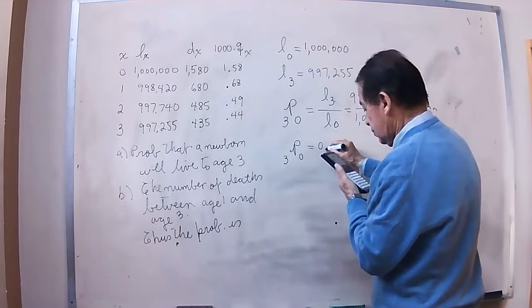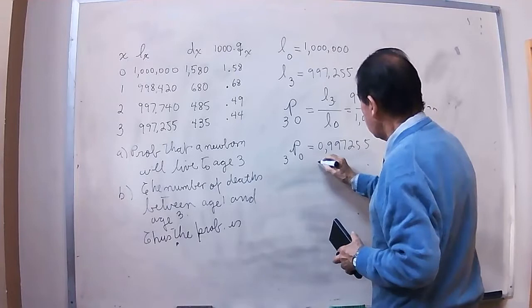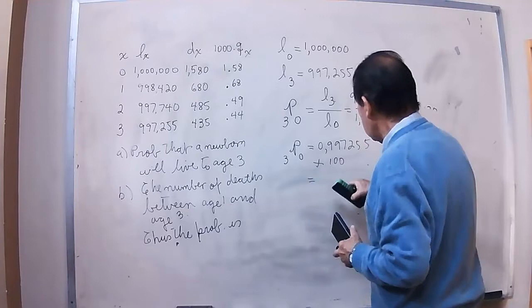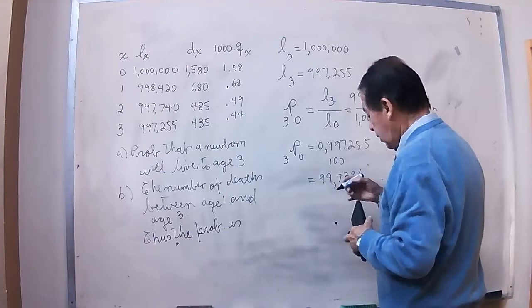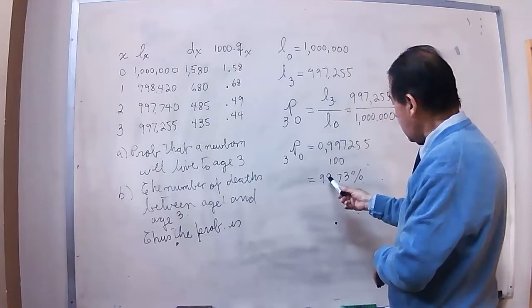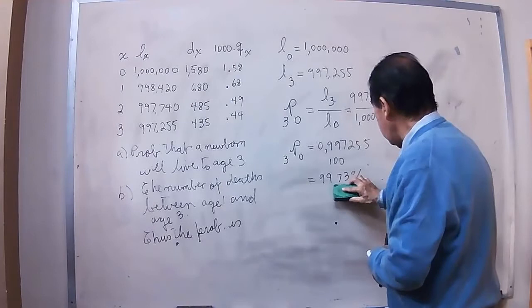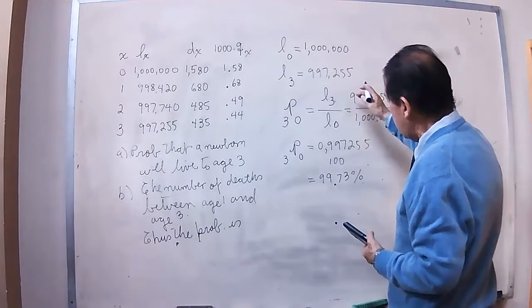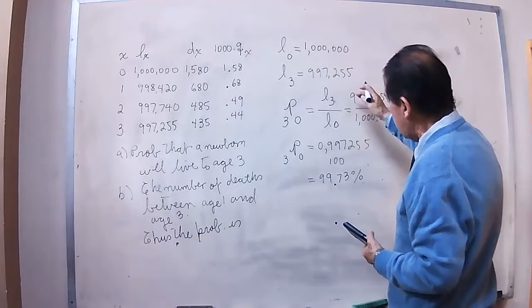We'll get 0.997255. In other words, if we multiply this by 100, we have a percentage. A percentage is a relative number, 99.73%. This will be the probability that a newborn will live until age 3, using this same table.